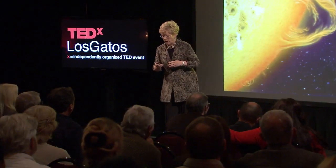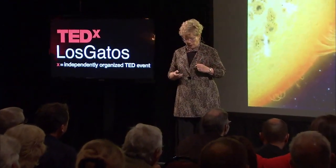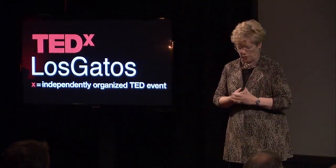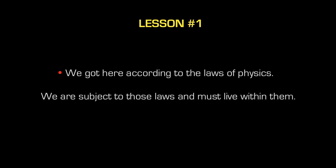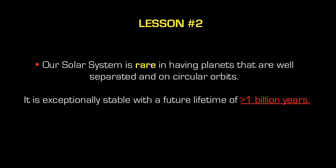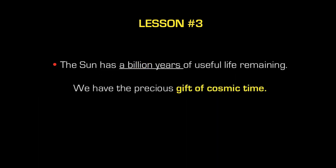So I've told you the most important chapters in our cosmic history. Let's see if we can draw some lessons from cosmology. Lesson number one: we got here according to the laws of physics. There were no miracles. We are subject to those laws and must live within them — this is the end of magical thinking. Lesson number two: our solar system is rare in having planets that are well separated on circular orbits. It's exceptionally dynamically stable, and it has a future lifetime of more than a billion years. And the third lesson: the Sun has a billion years of useful life remaining.